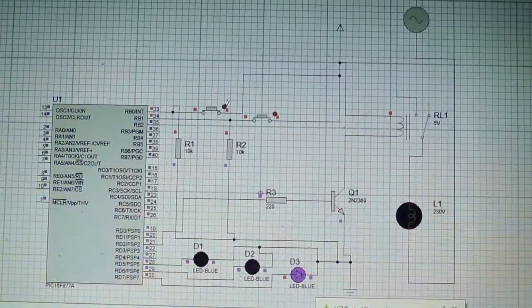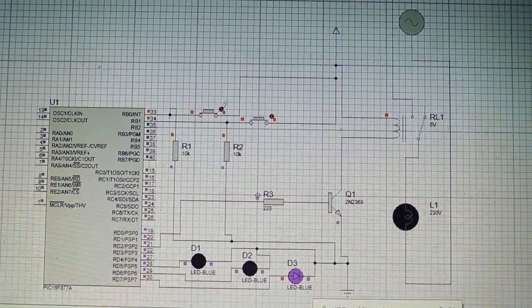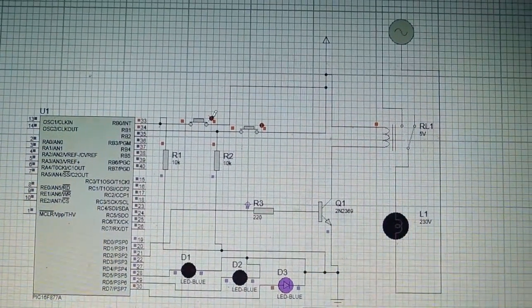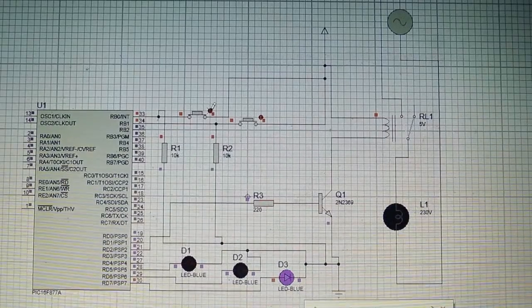This is the circuit diagram of automatic water level controller. In port B, I am connecting the wires which are represented as switches in the circuit diagram. And in port D, I am connecting the LEDs, different LEDs.